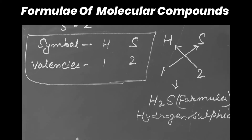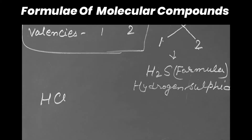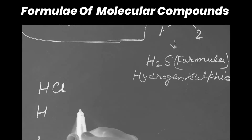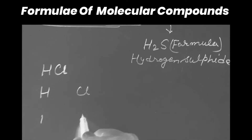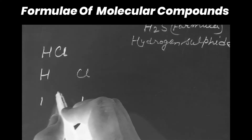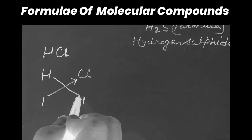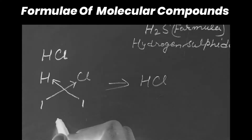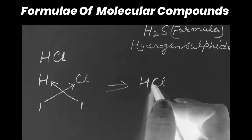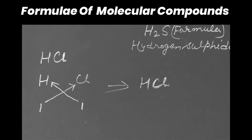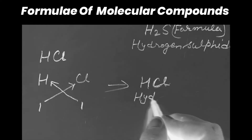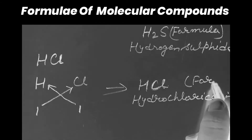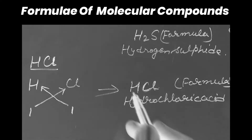Take another example: hydrochloric acid, also called hydrogen chloride. Hydrogen valency is 1 and chlorine valency — as written in that chart — is also 1. If we do the cross-over, there is no change at all. Both have the same valency, so a single atom of each will take part in the chemical reaction. As a result, we get hydrochloric acid: HCl. That is the formula generated with the help of the two elements and their valencies.